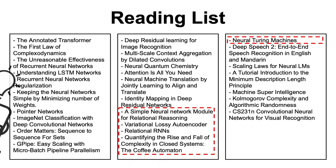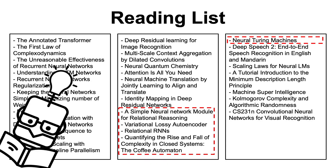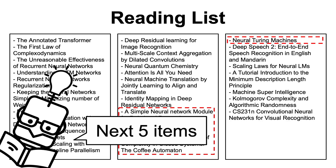Hi there! In this video, we continue with the 4 parts in the AI Reading List series that briefly introduces the study items which Ilya Sutskever offered to John Carmack back in 2020. So make sure that you have watched the previous 3 parts before continuing with this video, and if you already did that, let's get started.